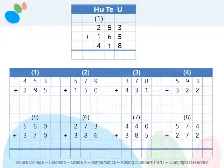Sixth sum: two hundred and seventy-three plus three hundred and eighty-six — answer is six hundred and fifty-nine. Seventh: four hundred and forty plus three hundred and eighty-five — eight hundred and twenty-five. Last sum: five hundred and seventy-four plus two hundred and seventy-two — eight hundred and forty-six.